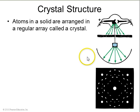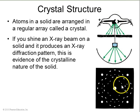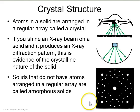If atoms are arranged in a regular array, they're called a crystal. A crystal has the property that if you shine an x-ray on it, you get a diffraction pattern, which gives you evidence that it is a crystal structure and tells you what kind of structure it is. There are also solids where the atoms are all connected randomly — that's called an amorphous solid.